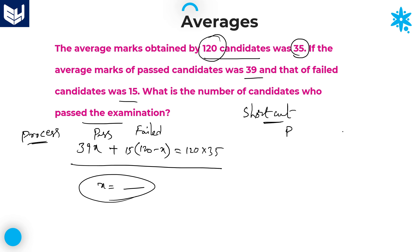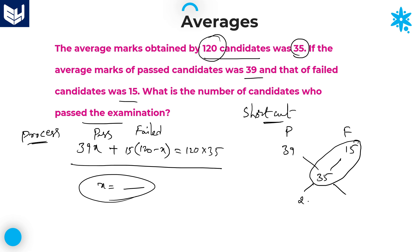Using the allegation rule: passed candidates average is 39, failed candidates average is 15, and overall average is 35. The difference between 35 and 15 is 20, and the difference between 39 and 35 is 4. Cancelling by 4, the ratio of passed to failed candidates is 5 to 1.